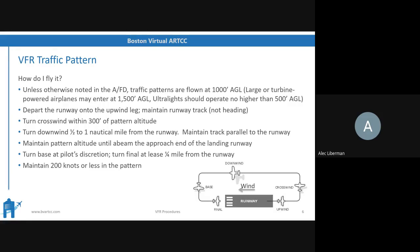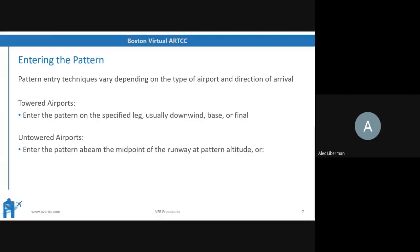Moving on to how we actually enter the pattern. There are two different techniques depending on the type of airport and the direction of arrival. At towered airports, just listen to what ATC tells you and enter on the leg they specify. You're usually told to enter downwind, enter base, or make a straight-in if you're already aligned with the runway. If it's a downwind or base, they will tell you left or right, whichever makes more sense.